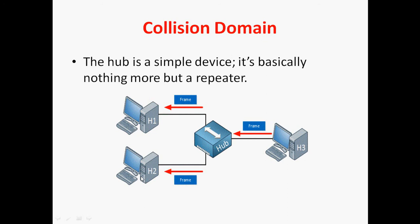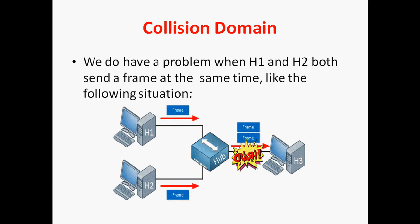Because this is a dumb device, once it receives an electrical signal on one port, it passes that signal to all other ports. The frame will be forwarded to H1 as well as H2. H1 will receive the frame and H2 will discard the frame. So here no collision will occur. We do have a problem when H1 and H2 both send a frame at the same time. H1 wants to send a frame to H3 and H2 also wants to send a frame to H3 — both frames will crash and a collision will occur.